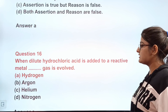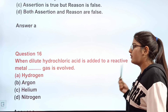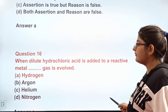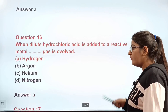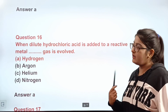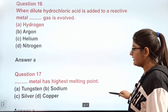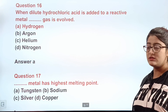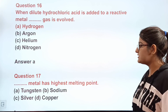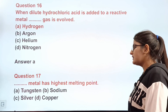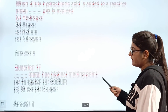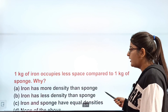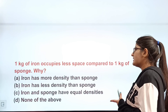Question number sixteen: when dilute hydrochloric acid is added to a reactive metal, which gas is evolved? Options: hydrogen, argon, helium, nitrogen. The correct answer is A — hydrogen gas is evolved. Question number seventeen: which metal has the highest melting point? Options: tungsten, sodium, silver, copper. The correct answer is tungsten.